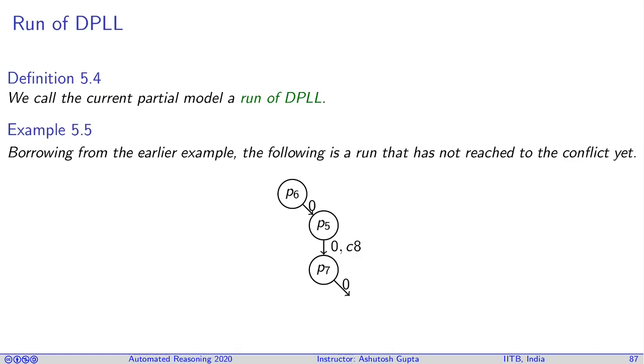Before that let's look at a few phrases, terms and definitions. Once we assign values to variables and do unit propagation, we call that a run of a DPLL. For example, you will say p6 assigned to 0, and then p5 assigned to 0, and p7 assigned to 0. This is a run of a DPLL.